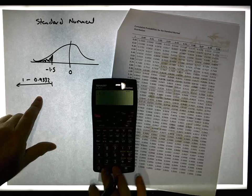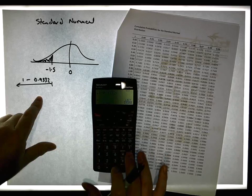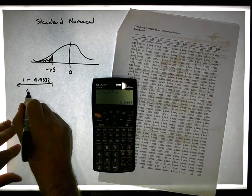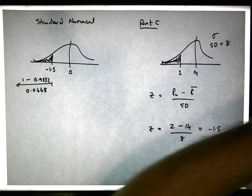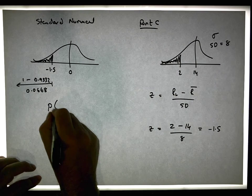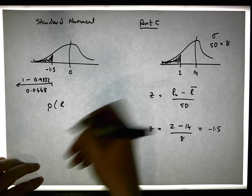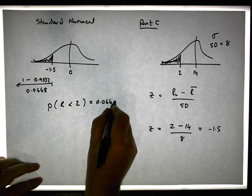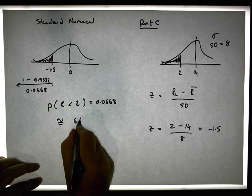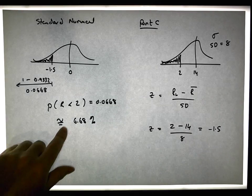When I take that away from 1, 1 minus 0.9332 gives us a value of 0.0668. In other words, what we're saying here is that the probability that the return of this portfolio will fall below 2...